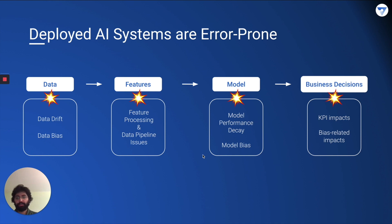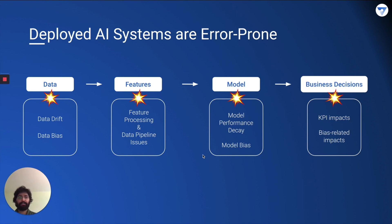Now what can go wrong here? Many things. The data distribution can change — that is commonly referred to as data drift. The data you see in production is very rarely similar to the data used for training. There can be biases that come into your data. Even if that doesn't happen, many things can go wrong in your data engineering pipeline — feature processing bugs, API issues that can cause feature values to get contaminated. These issues — data drift and data pipeline problems — can result in faulty data going into your model, causing performance decay or biased behavior, impacting your KPIs and creating bias-related consequences for your product.